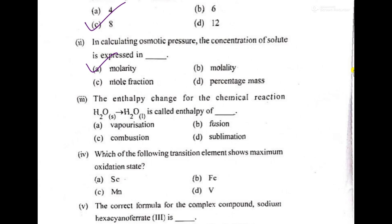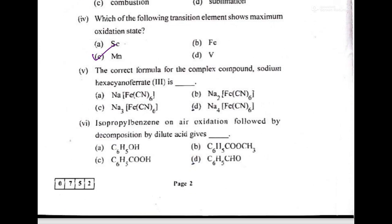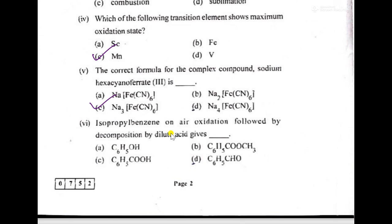Which of the following transition elements shows maximum oxidation state? It's Mn manganese. Then the correct formula for the complex compound sodium is C. Isopropylbenzene on air oxidation followed by decomposition by dilute acid gives C6H5OH.